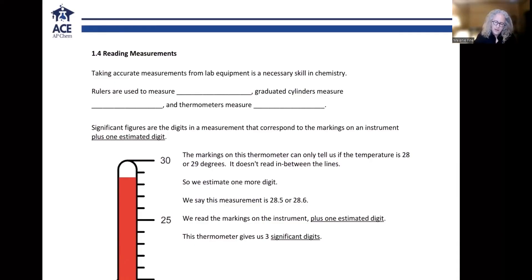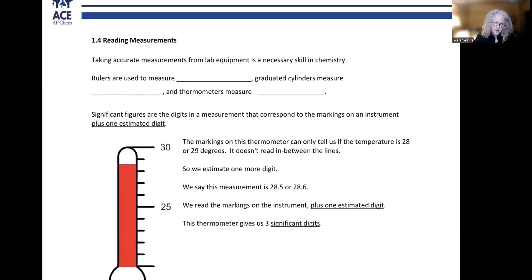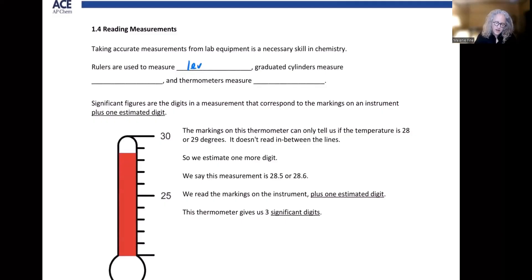Taking accurate measurements from lab equipment is a necessary skill in chemistry. We know that rulers are used to measure length, graduated cylinders measure volume, and thermometers measure temperature.